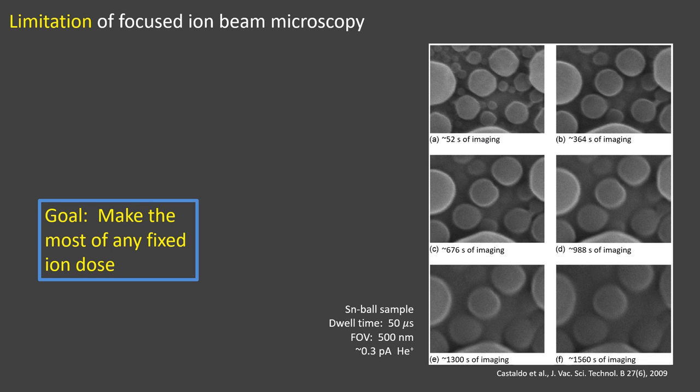There are some limitations of the microscopy. Because the ions are very heavy, they cause damage to the sample, especially at long scan times. As time increases, we can see that some small features in the red and blue boxes disappear. Our goal here is to make the most of any fixed ion dose. Doing so will equivalently allow us to reduce ion dose for any desired image quality.